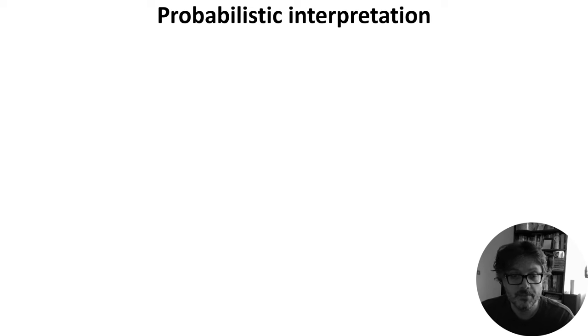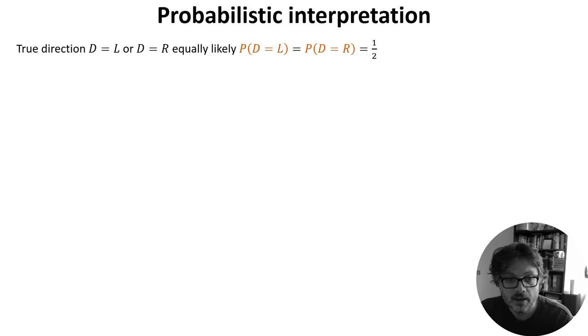That's nice, but still this model might seem a bit ad hoc. Fortunately, it turns out that there's a neat probabilistic interpretation of this model. Let's set up a probabilistic model of the task. We'll say that there's a true direction d that can be either L or R, and both options are equally likely. You can actually modify this to make the options have different probabilities too.